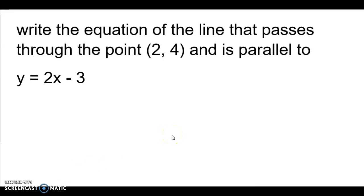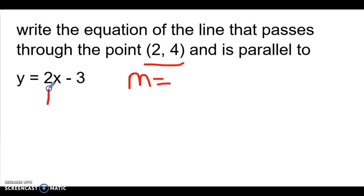We are going to write an equation of a line that is parallel to a given equation. We need two things to write an equation of a line: a slope and a point. The point was given to us, so we need a slope. We're going to look at the equation that's given to us and locate that slope. Because it's parallel, that means they have the same slope, so the slope is two.